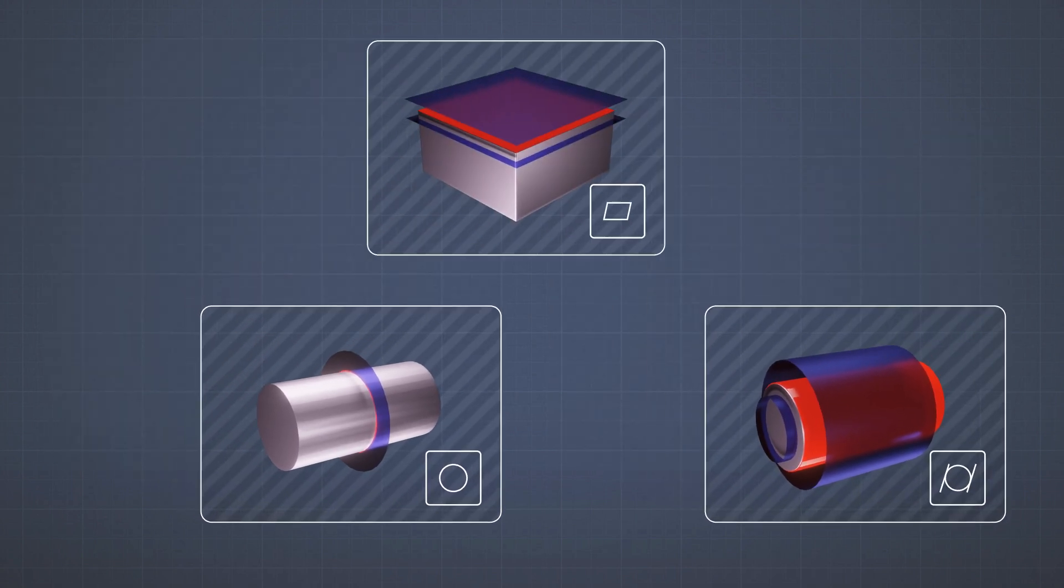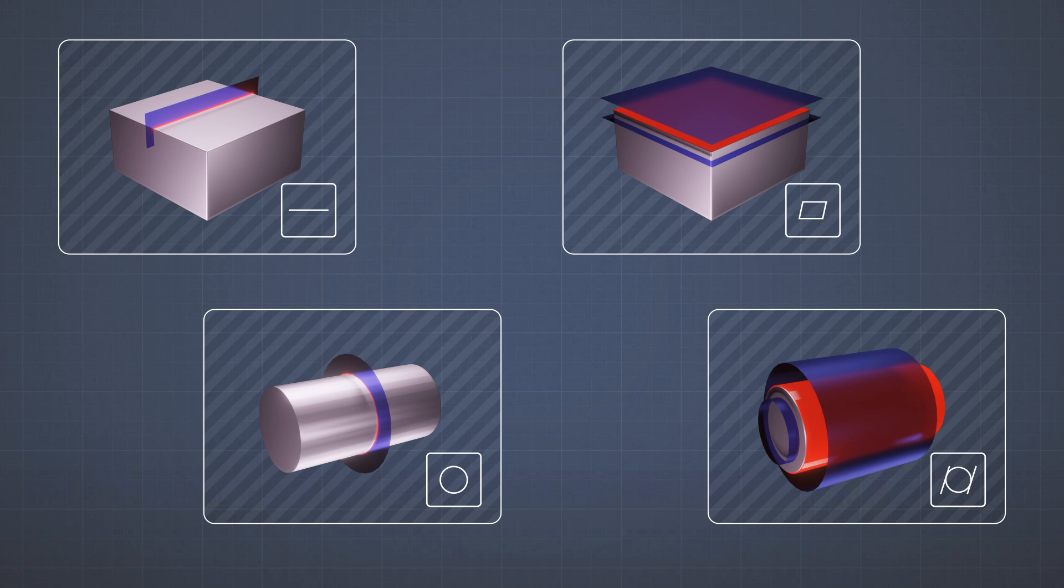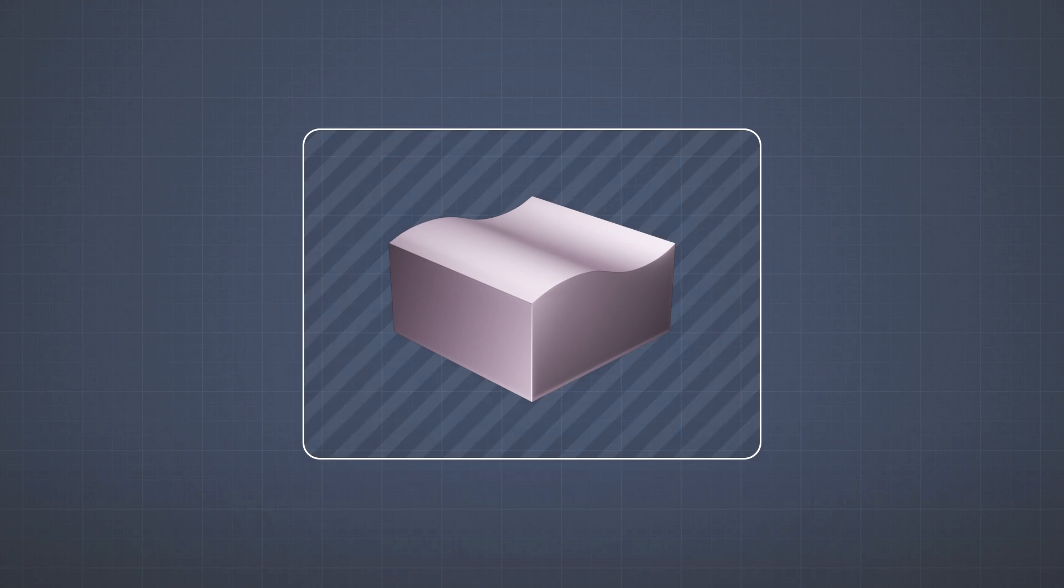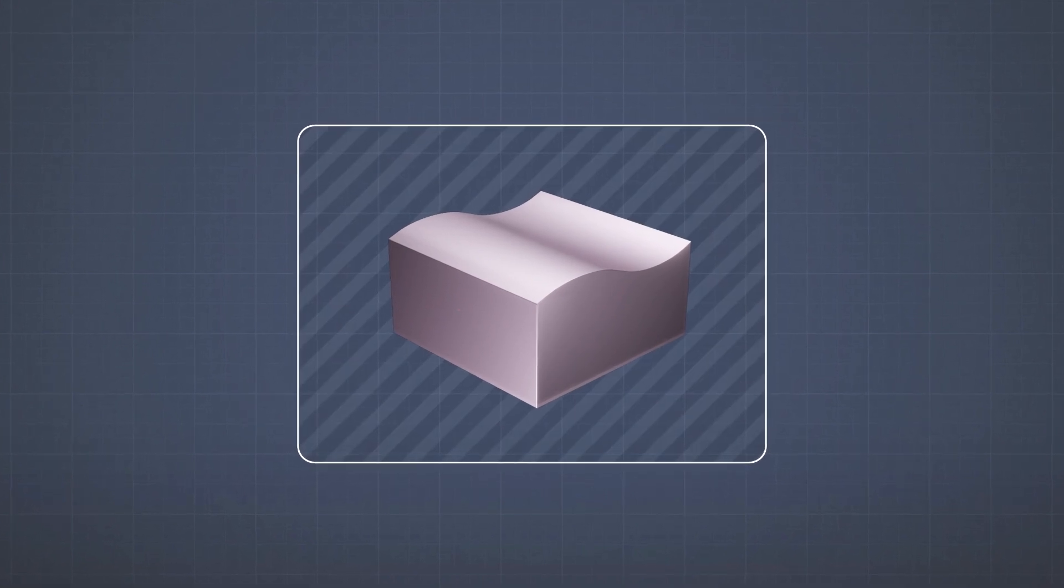But what if the surface that we would like to tolerate is not a line or a cylinder or something of these tolerances that we mentioned? What if it looks like this for example? How do we tolerate this?